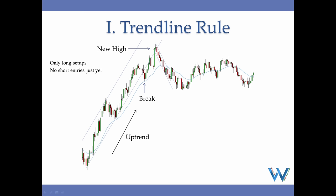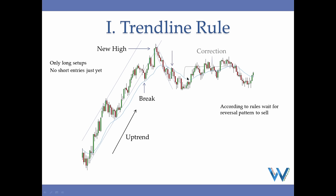After that, price created a shortened downtrend which also had a break, a move to a new extreme, and then price indicated a correction phase. So after a break, a new extreme, and a reversal pattern, you can start looking for shorts. But once this downtrend played out — because it was just a shortened pattern — the correction phase for the overall initial uptrend came into play.